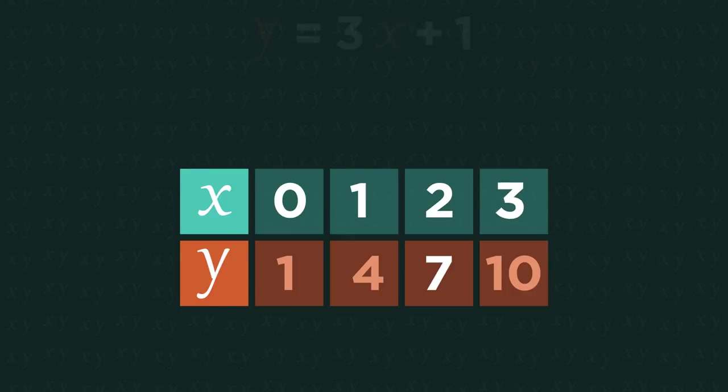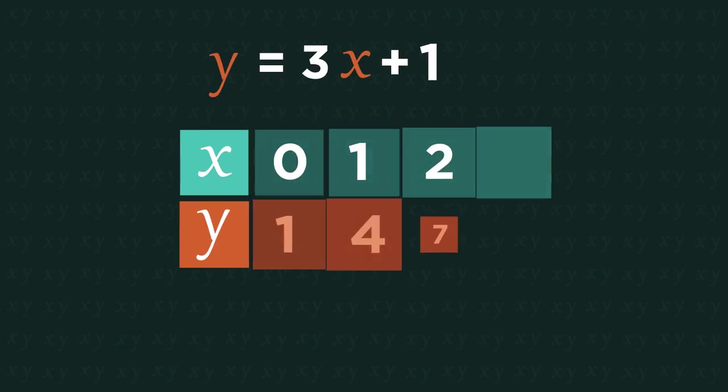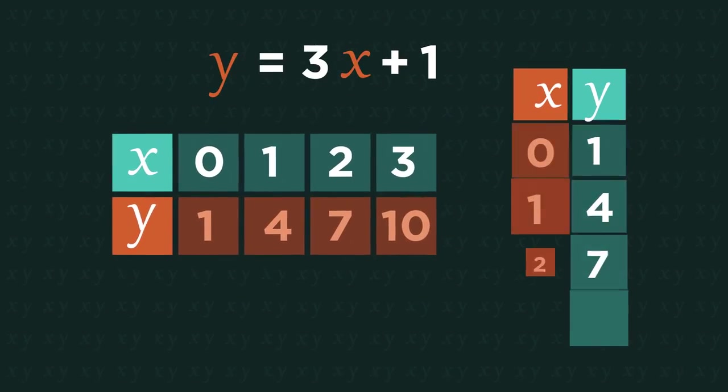This table we have generated is known as a table of ordered pairs or a table of values. It can be horizontal like this or vertical.